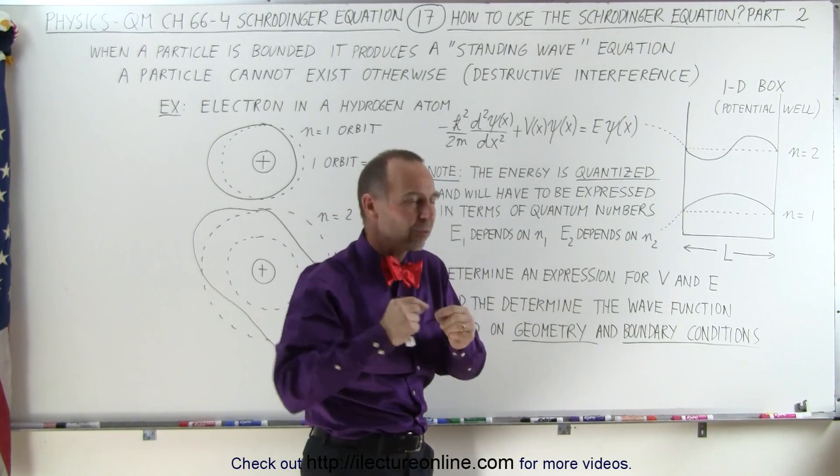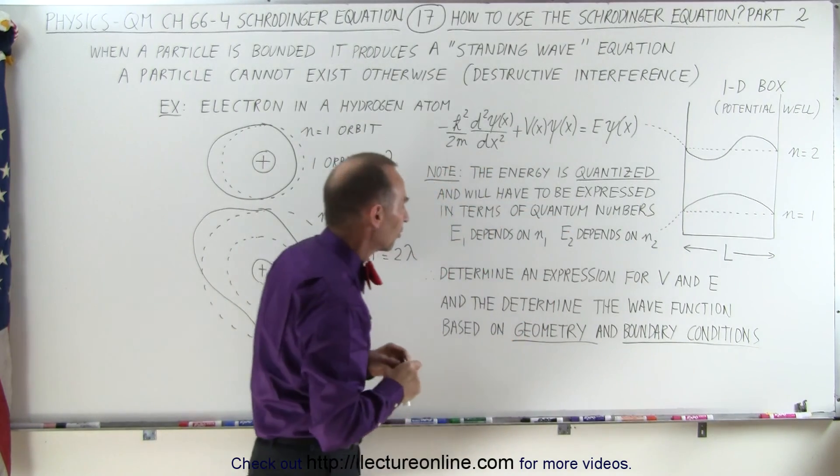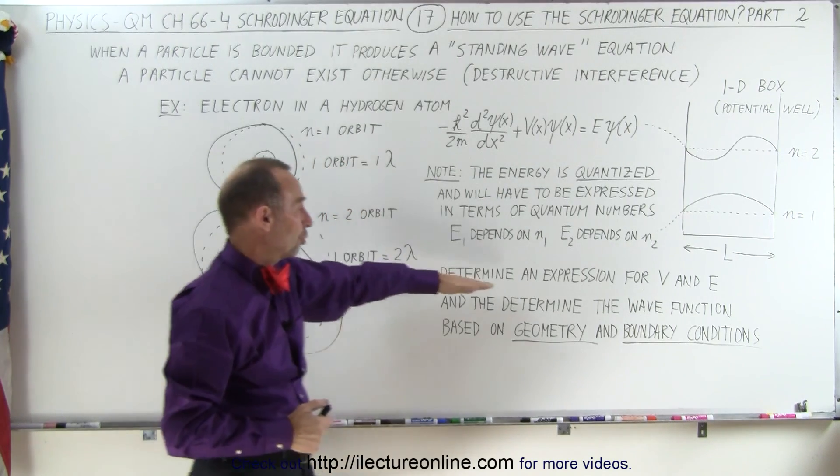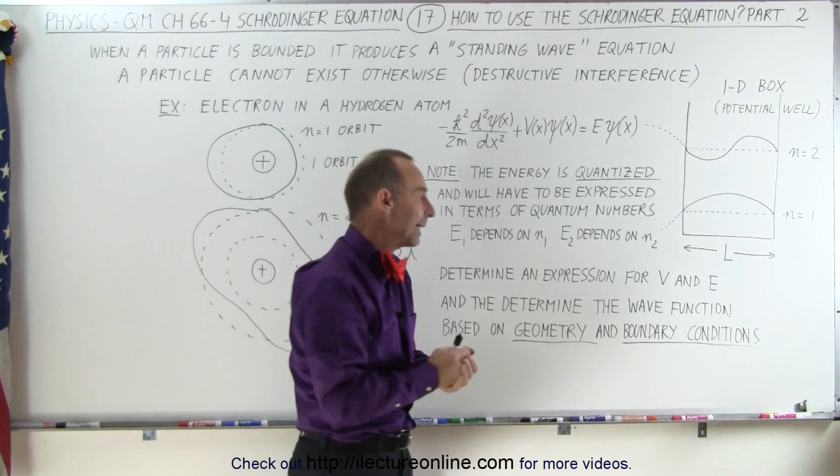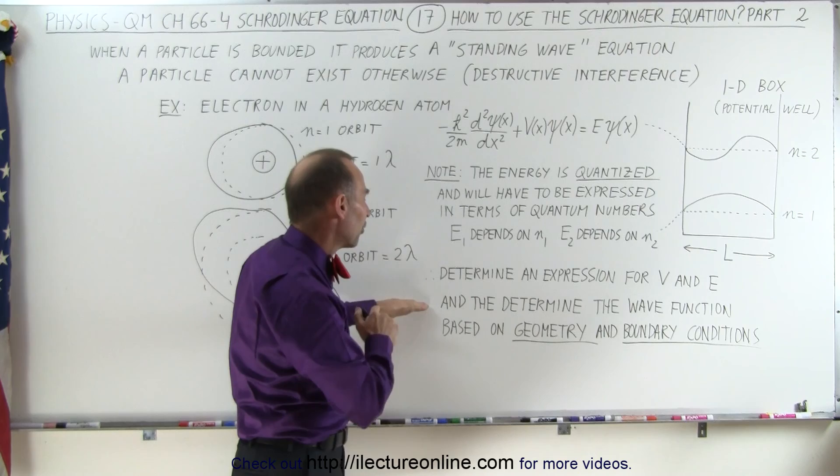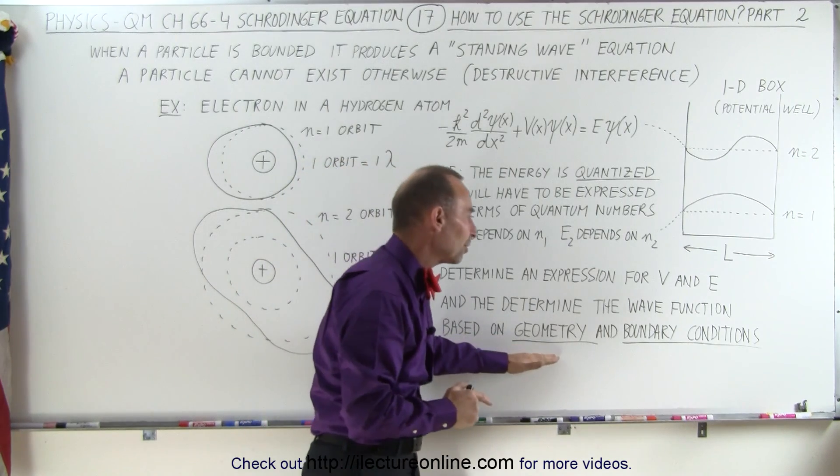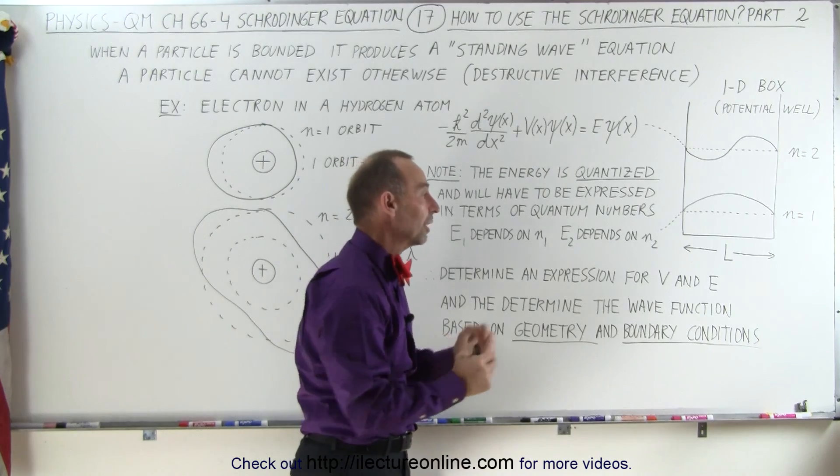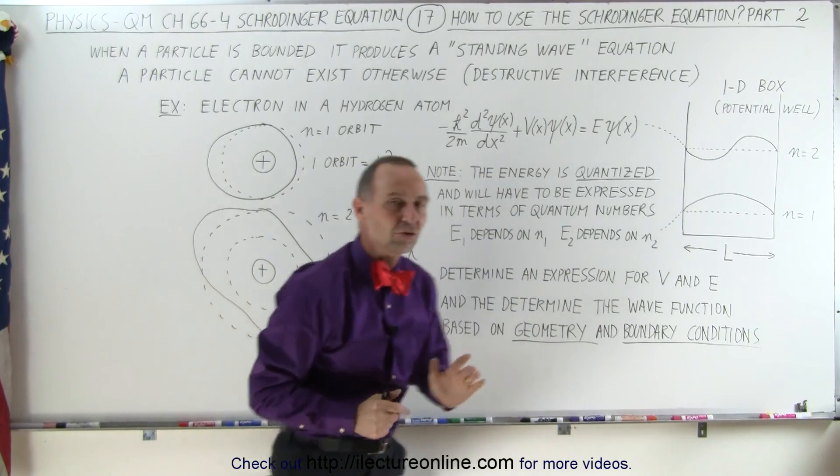So there's quantum jumps between the energy levels that particles can exist at. Keeping that in mind, it all comes down to determining expressions for the potential and kinetic energy and for the total energy and to determine the wave function based on the geometry of the particle, where the particle is located, what the boundary conditions are, and what the physical geometric conditions are of the particle.